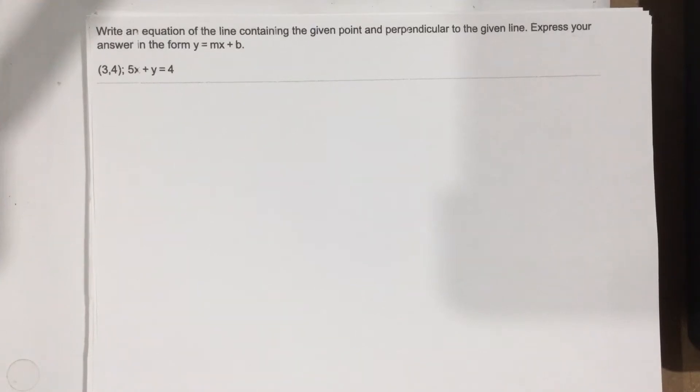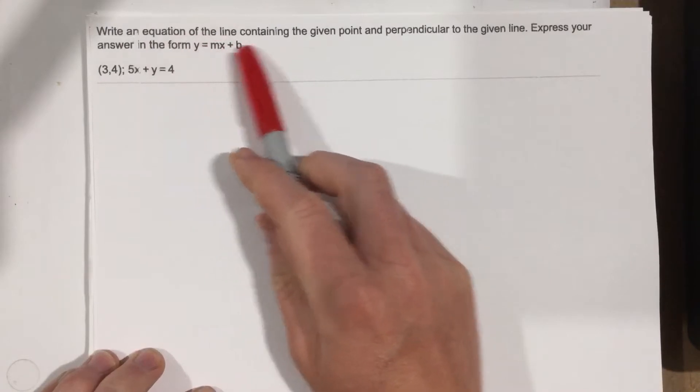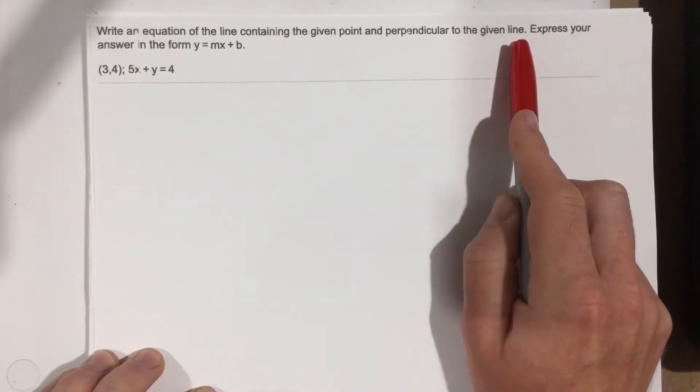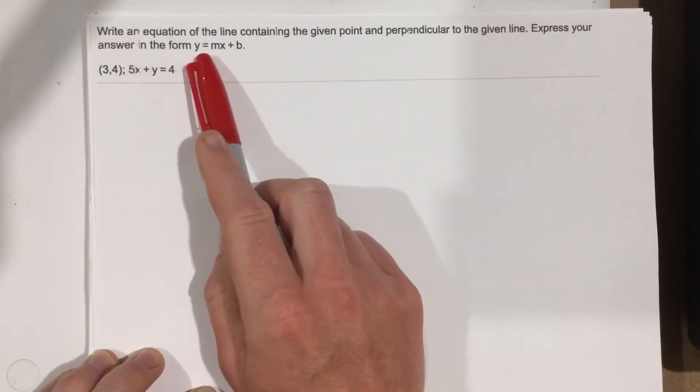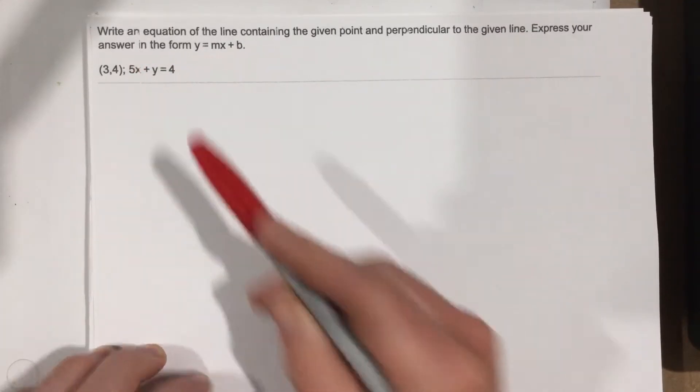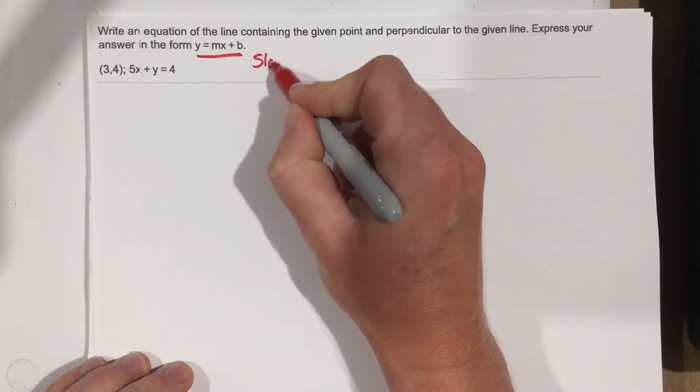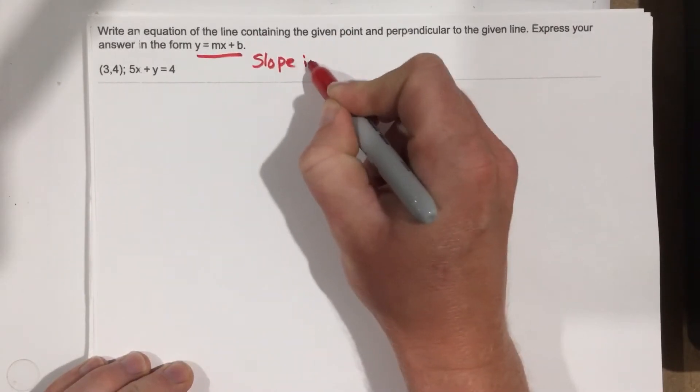This is problem number 3 from section 2.1. In this problem, they want us to write an equation of the line containing the given point and perpendicular to the given line. Express your answer in the form y equals mx plus b, which we know is just that slope-intercept form.